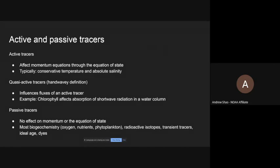If you're talking about this in a full fluid dynamics context or an ocean model, it is the conservative temperature and the absolute salinity, and these are all conserved quantities within the ocean subject to their sources and sinks. Then we have things I like to call quasi-active tracers — I don't know if there's a formal definition, but this is my own internal way of thinking about them. These are things that essentially influence the fluxes of an active tracer. The classic example is something like chlorophyll, which is a biogeochemical tracer that affects the absorption of shortwave radiation within the water column.